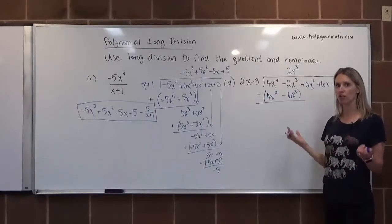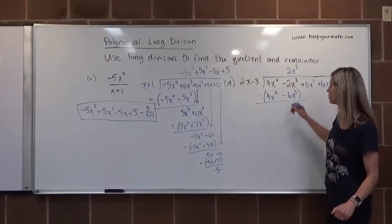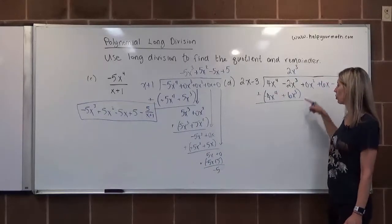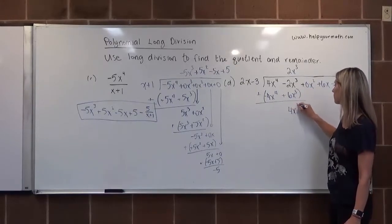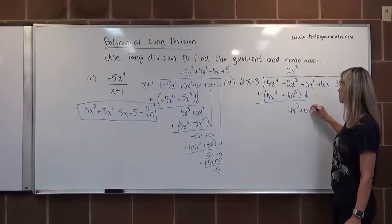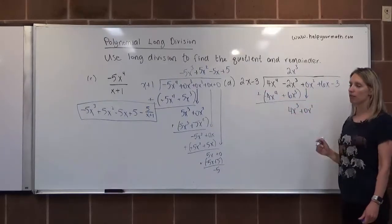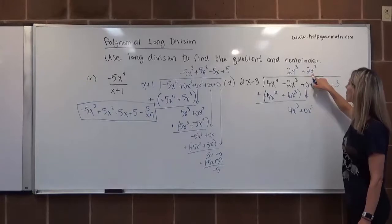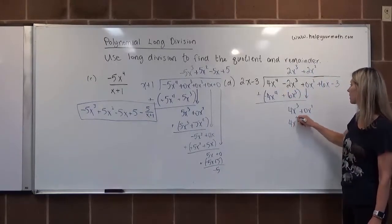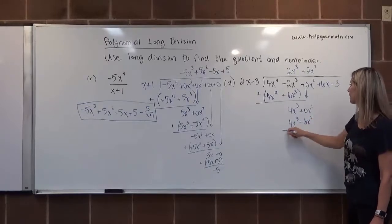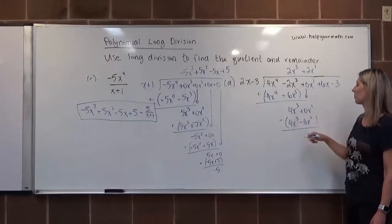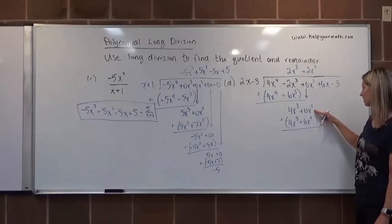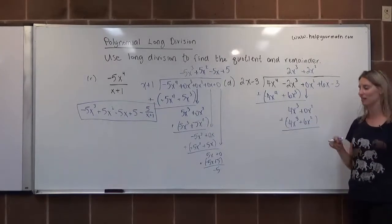We subtract by changing signs. Those cancel as they should. -2x³+6x³ gives 4x³. Bring down 0x². We divide 2x into 4x³ to get 2x², so plus 2x². Multiply 2x² by (2x-3) to get 4x³-6x², subtract, and 4x³ and -4x³ make 0. Then 0x²+6x² gives 6x².